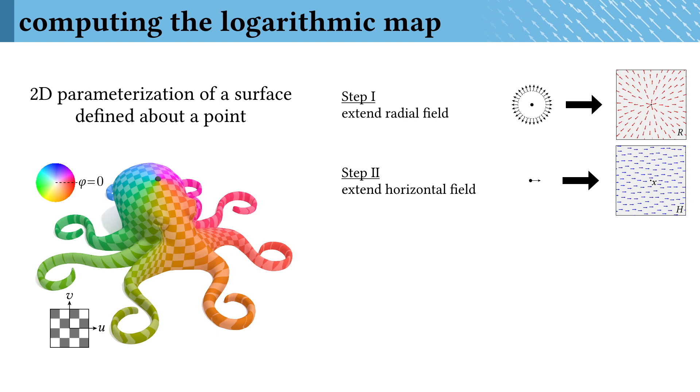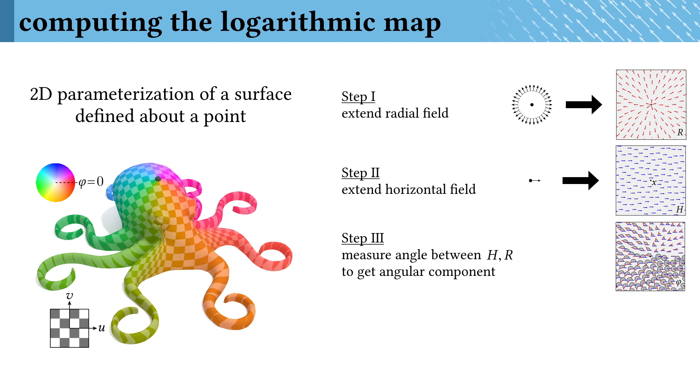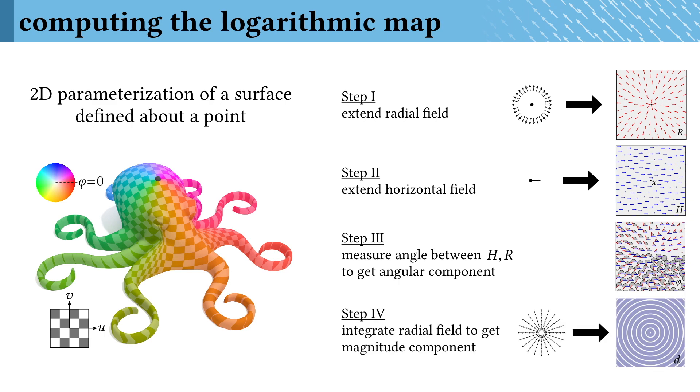Then we take a single vector defined at the source and parallel transport it to get a horizontal field. Measuring the angles between these two fields will give the polar component of the logarithmic map, and integrating the radial field will give the magnitude of the logarithmic map, which is just the distance from the source.